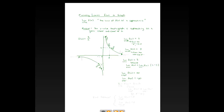Therefore, the general limit as x goes to 0 does not exist. That's because the right-hand limit — infinity — does not equal the left-hand limit — negative infinity. Both one-sided limits must be equal for the general limit to exist.